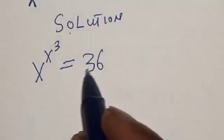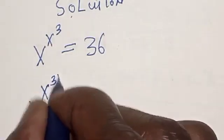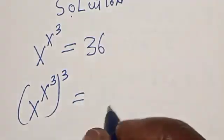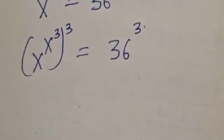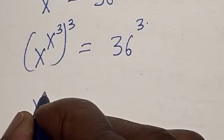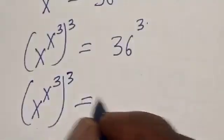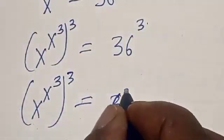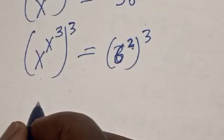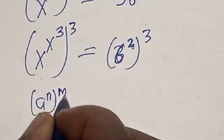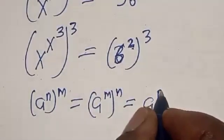Let's take the cube of the exponent of both sides: s raised to the power s raised to the power 3, times 3, is equal to 36 raised to the power 3. Remember that a raised to power n raised to power m is equal to a raised to power n times m.